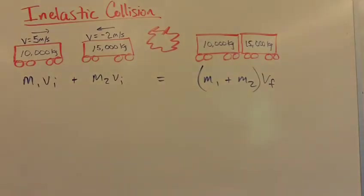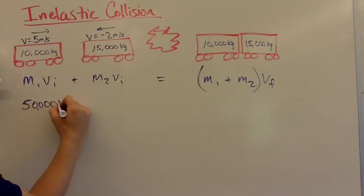So how do we do this? We've got to multiply the mass times the velocity. It's 10,000 times 5. That's 50,000 kilogram meters per second.